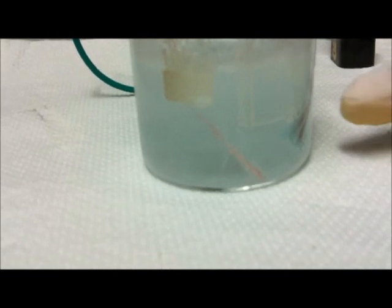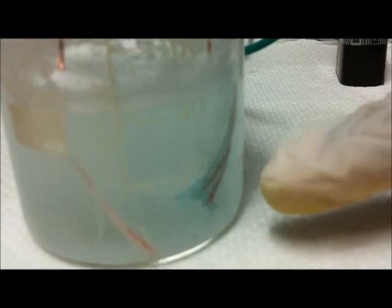On the far right of the beaker you can see a small electrode with a blue deposit on it. That blue deposit is copper hydroxide, that is copper 2 hydroxide, which I'm pointing to at the moment. And here's a much closer view.